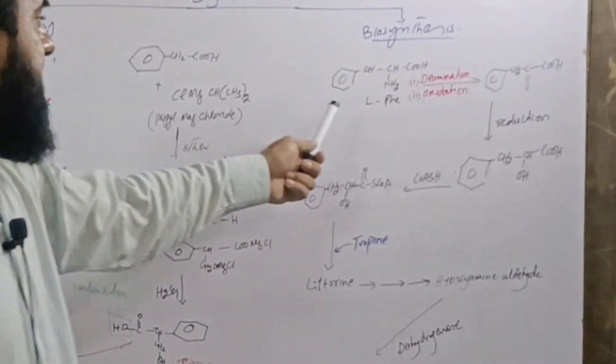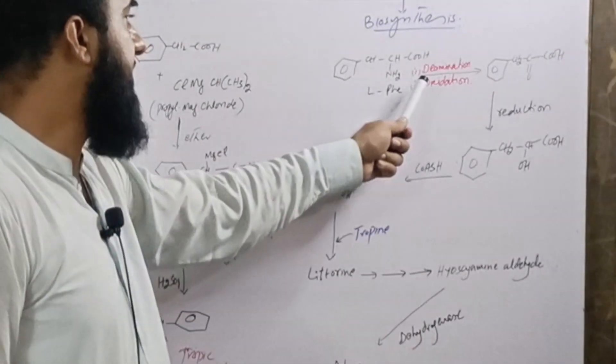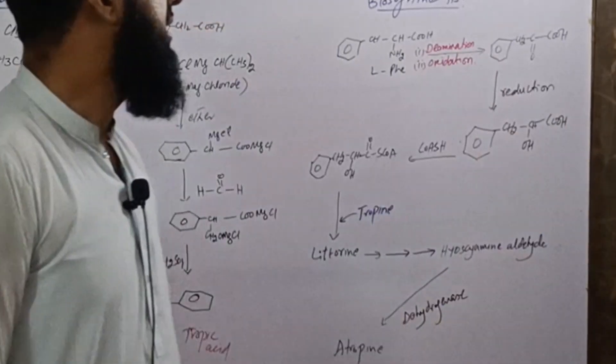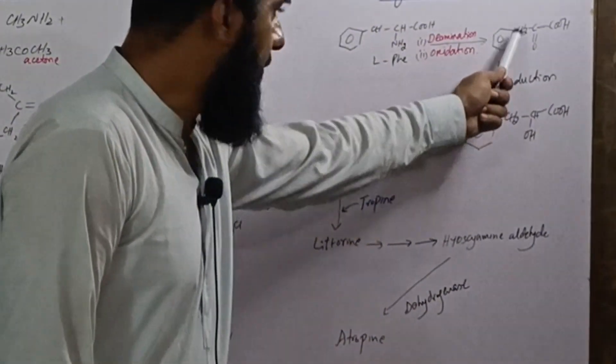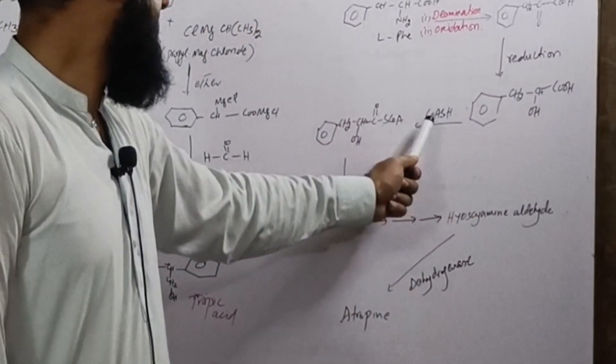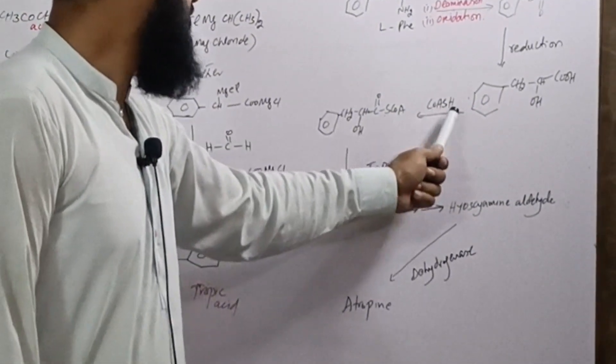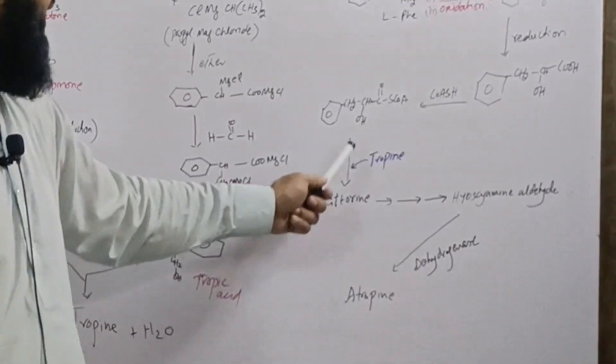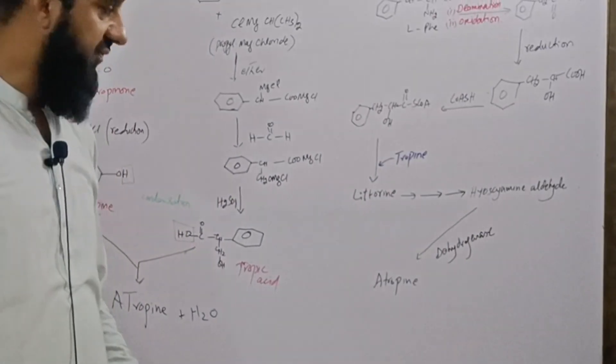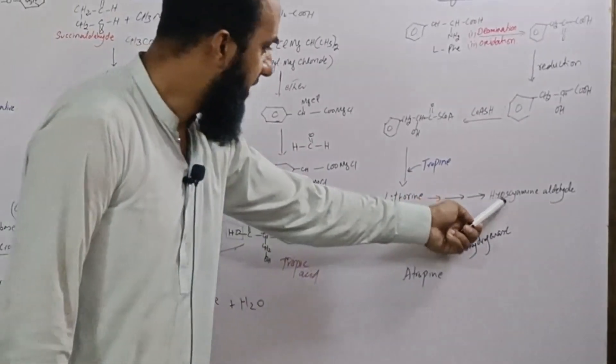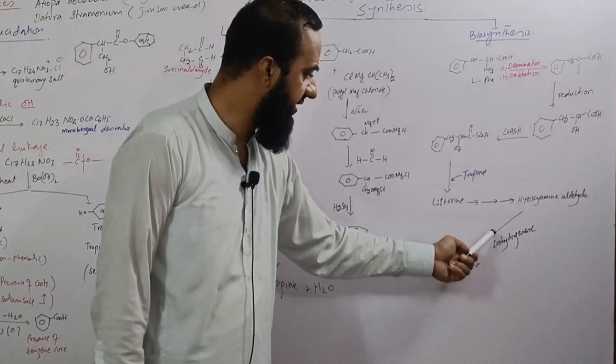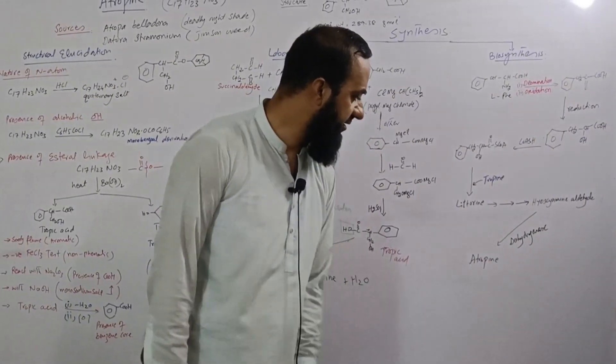Biosynthesis: this is L-phenylalanine, an amino acid. It undergoes deamination followed by oxidation at alpha carbon and we get phenyl pyruvate. This undergoes reduction and we get phenyl lactate. This reacts with acetyl coenzyme A and we get this structure. This structure with tropine base and leturine compound is formed, which after several steps changes into hyoscyamine aldehyde, which in the presence of dehydrogenase undergoes dehydrogenation, reduction, oxidation takes place and we get atropine.